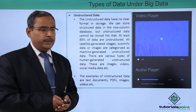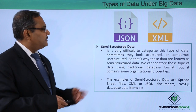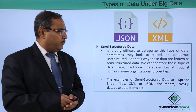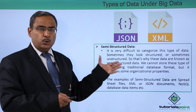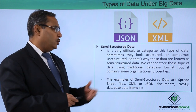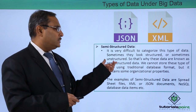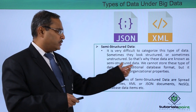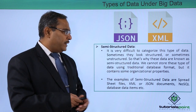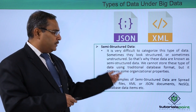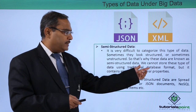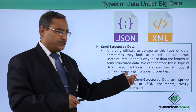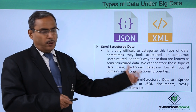Now let us come to the last category: semi-structured data. It is very difficult to categorize this type of data — sometimes it looks structured and sometimes it looks unstructured. That is why it is known as semi-structured data. We cannot store this type of data using a traditional database format, but it does contain some organizational properties.